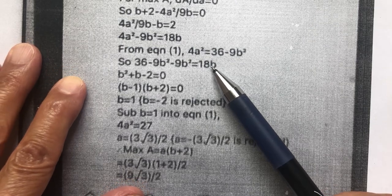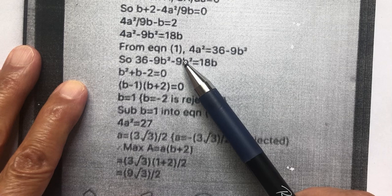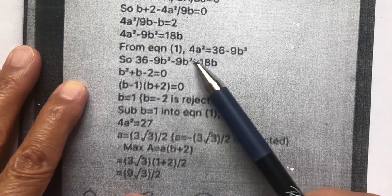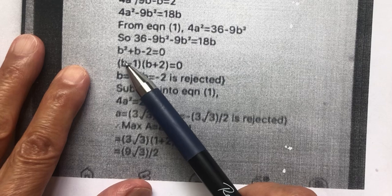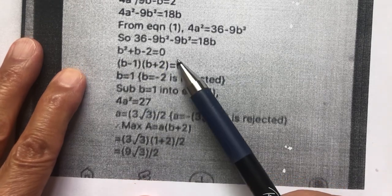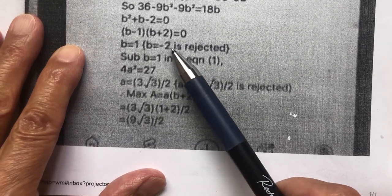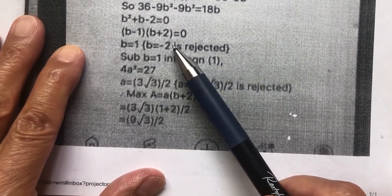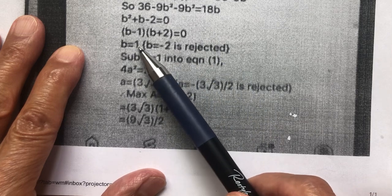Now, everything is in b. So I can solve for b. Simplify this relation. Factor this quadratic relation. I get this. And then b is equal to 1 or negative 2. But I don't want negative answer. So I just pick b equals 1.